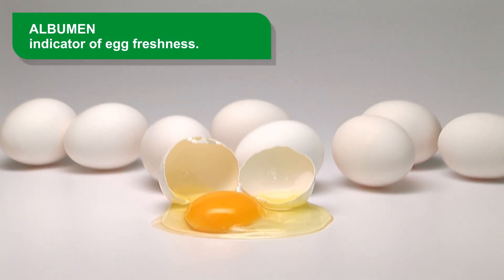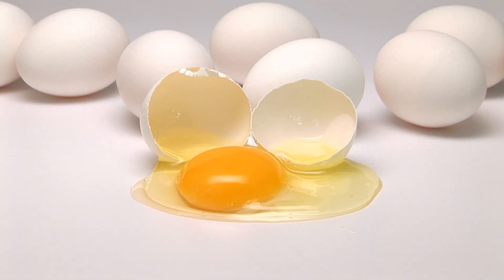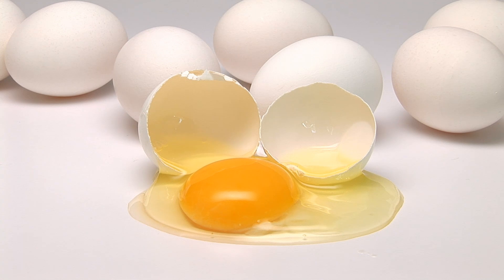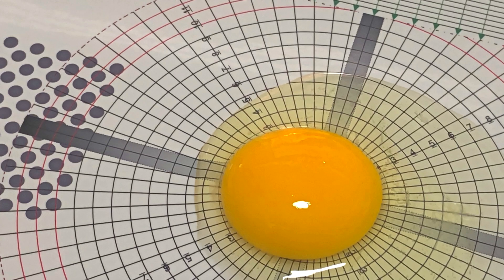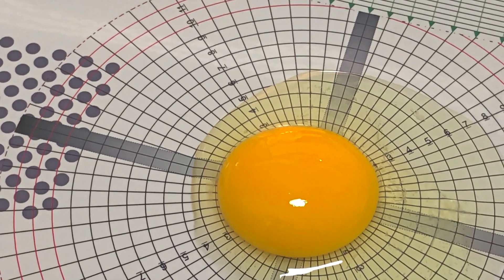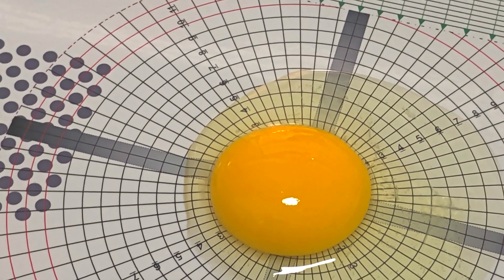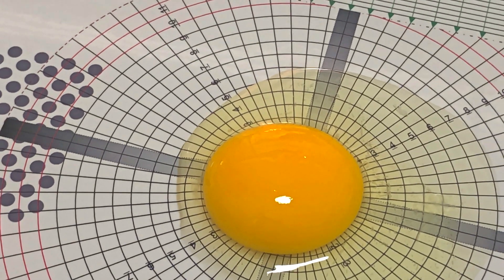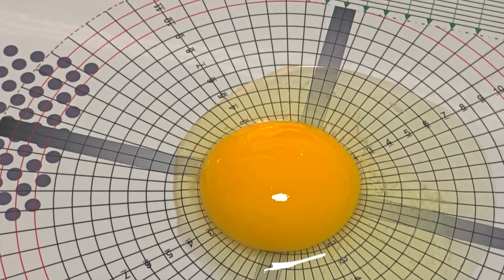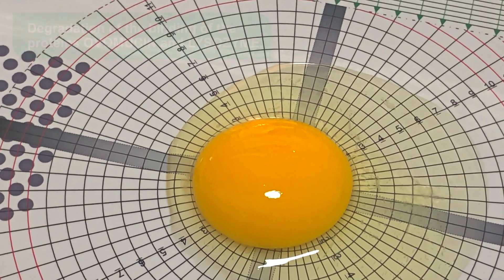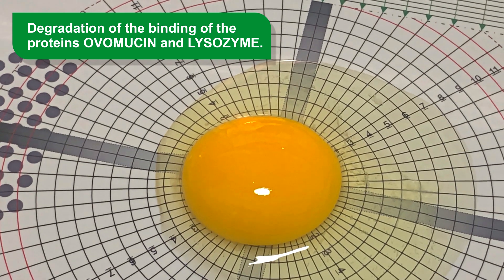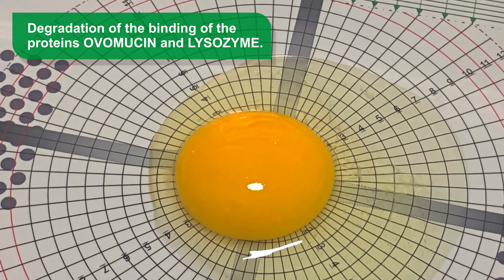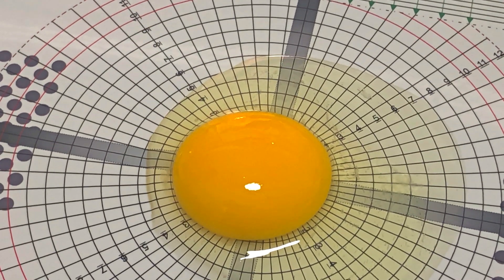Along with the height of the air chamber, the consistency of the albumin is one of the indicators of the freshness of the egg. After oviposition, the consistency of the albumin decreases over time. This occurs due to an increase in pH, which leads to the degradation of the binding of the proteins ovomucin and lysozyme, which make the albumin more and more fluid.